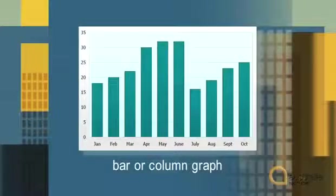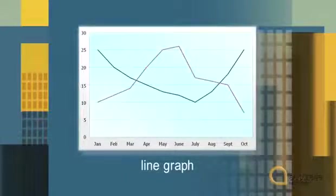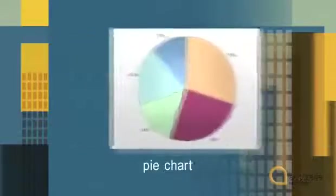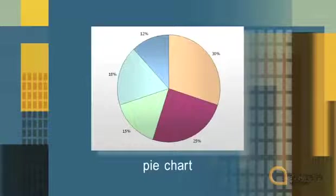Today, we're looking at presenting information using charts and graphs. We saw three types of diagram: a bar or column graph, a line graph, and a pie chart.